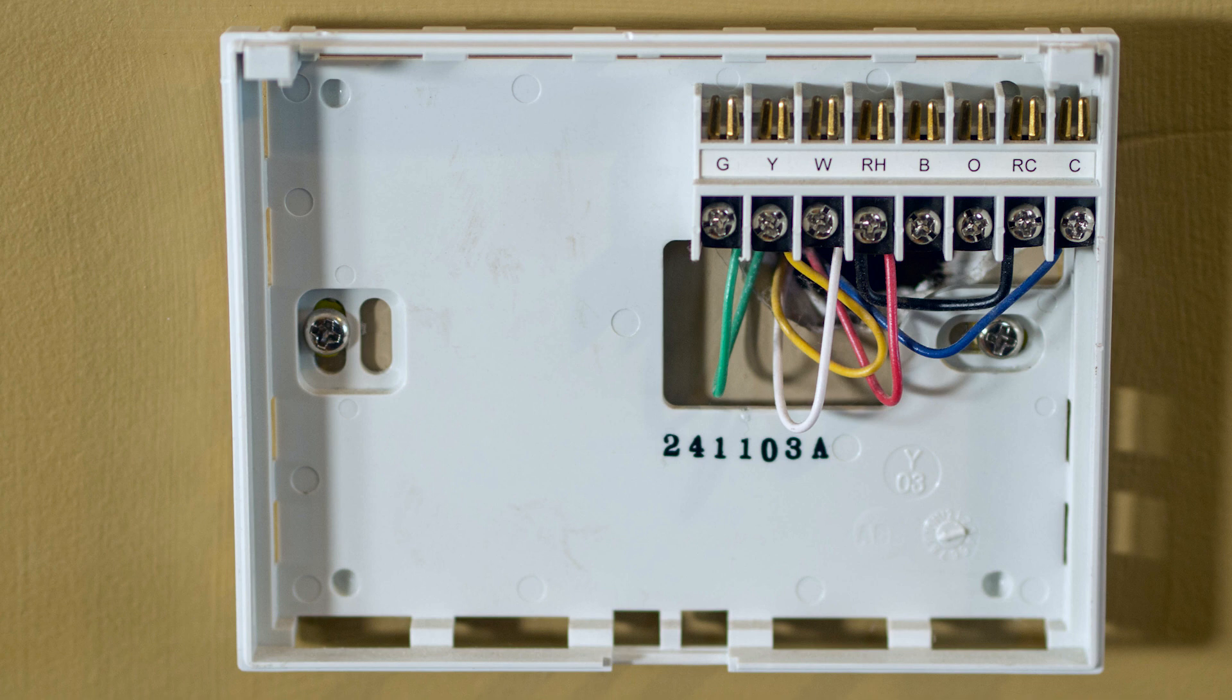Once you can see the wall plate and the wires, check to make sure this thermostat will work with your system. Under your thermostat, you'll see different colored wires connected to wire terminals with letters next to them.